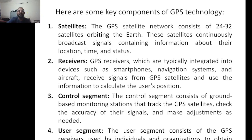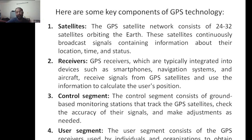Here are some key components of GPS. You have the satellite segment and receivers. The control segment consists of ground-based monitoring stations that track the GPS satellites, check the accuracy of signals, and make adjustments if needed. The user segment consists of receivers used by individuals or organizations such as government bodies or space agencies like ISRO and NASA.